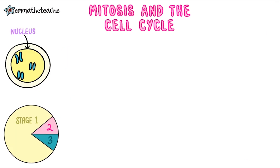Now that you understand that the nucleus contains chromosomes, we can look at mitosis and the cell cycle. The cell cycle is split into three parts: stage 1, stage 2, and stage 3. We're going to look at each stage in turn to understand how they work together to produce new cells.